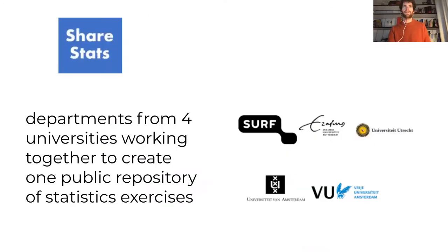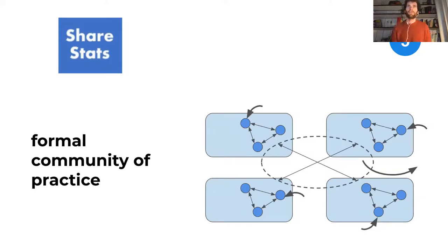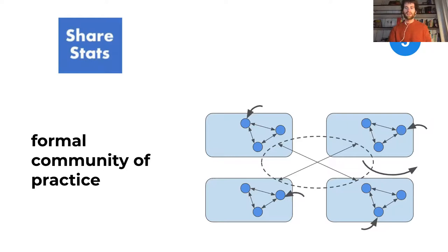That sharing between institutions leads to the fifth pattern: four university departments working together to create one public repository of statistics exercises — the ShareStats project. It's a government-subsidized project by SURF. What we see here is a formal community of practice: different communities at different institutions formally collaborating and sharing all their work. It's a two- to three-year project, very structured, and all the resources they curate together are published in batches. That's the fifth pattern: formal collaboration between communities.